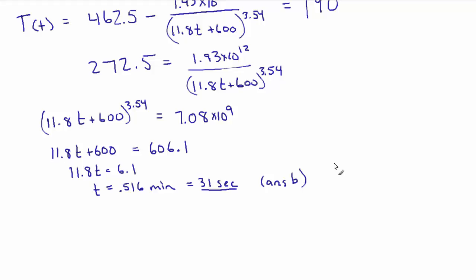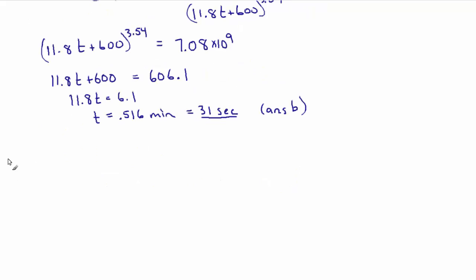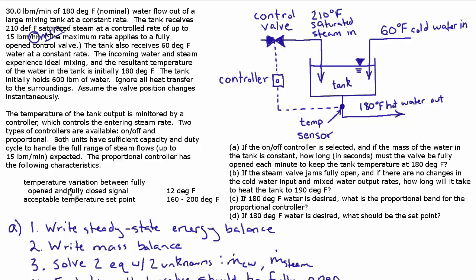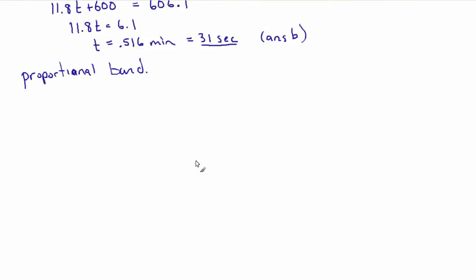Let's close out with Parts C and D. For Part C, they want to know the proportional band. In simple terms, the proportional band is the size of the range of temperatures through which the valve strokes — from fully open to fully closed. We were told the temperature variation between the fully-open and fully-closed signal is 12 degrees, so the proportional band is 12 degrees Fahrenheit.